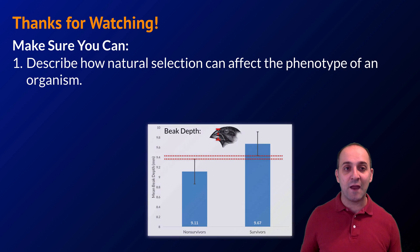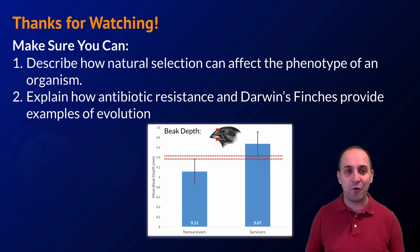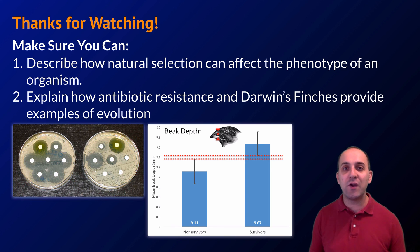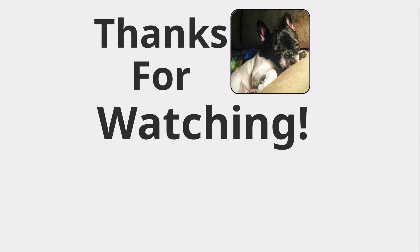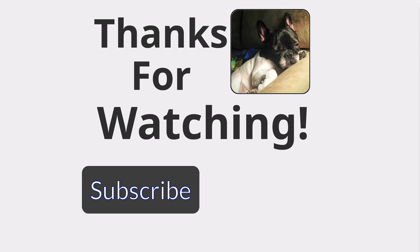Make sure you can do the following things here at the end. Make sure you describe how natural selection can affect the phenotype of an organism, and also make sure you can explain how antibiotic resistance, and the changes that we see in the beaks of Darwin's finches, provide examples of evolution. If you can do those two things, you're doing great. If not, that's okay too. Take a moment and write down any questions that you have so that you can get the answers that you need. Thanks again for watching. I really appreciate it. Have a great day.